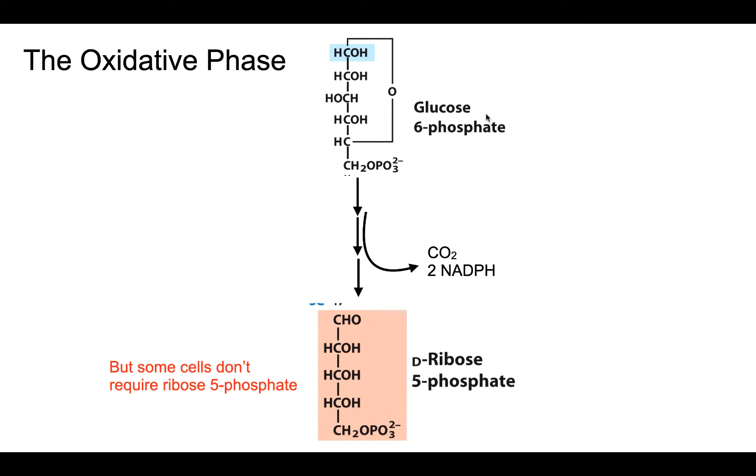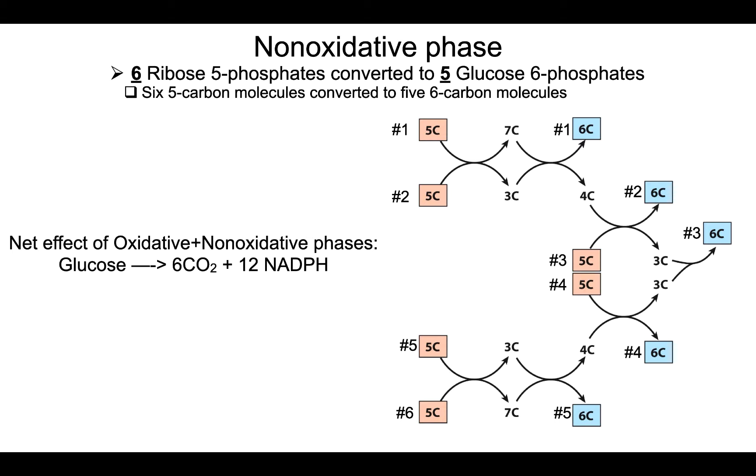turning it into a 6-carbon molecule? Let's take a look at that. The non-oxidative phase takes 6 ribose 5-phosphates into 5 glucose 6-phosphates. And if you do the math, that works out right: 6 ribose 5-phosphate times 5 carbons